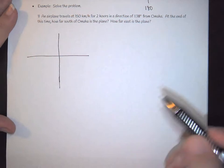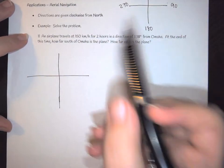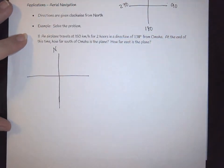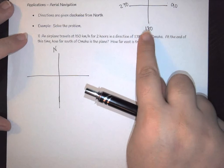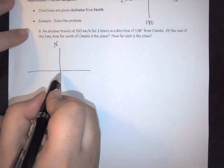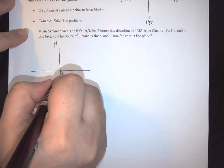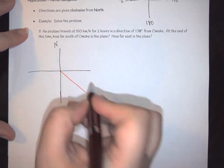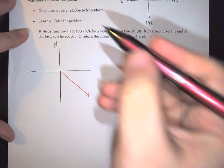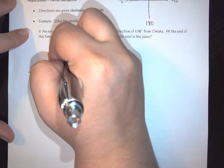Start by drawing yourself your picture. So we've got this picture here and we are going two hours in the direction of 138 degrees. So first I would put in your north, and 138 is not quite to 180, so we're going to fall somewhere down in here. So we would go ahead and put that our angle is going to be down in this direction, and from north to get to here we went 138 degrees.